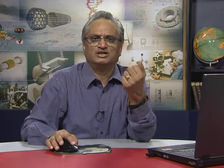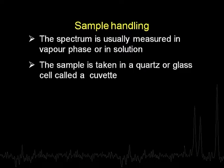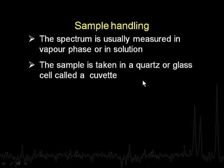Now let us see how we handle the sample. Sample handling basically means that the spectrum is typically taken either in the vapor phase or in solution, most often in solution. We need a container to hold the sample, which is typically a quartz or glass cell called a cuvette. Quartz is most often used because glass is not suitable for the UV range - glass absorbs in the UV range. Quartz is a little expensive but is more often than not the material of choice.